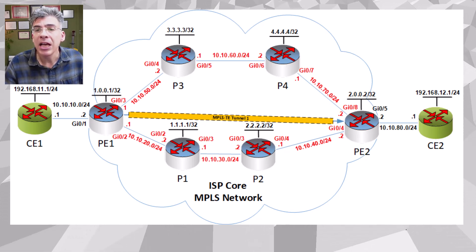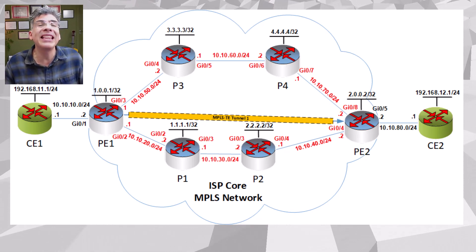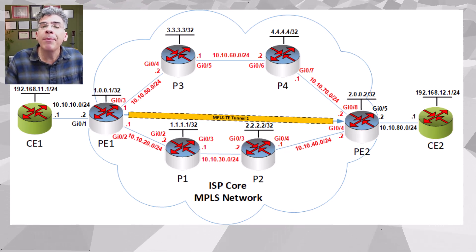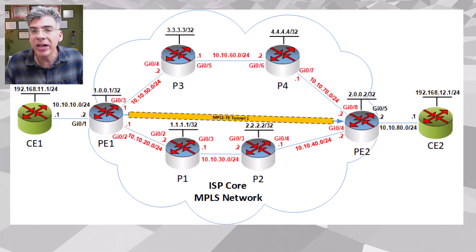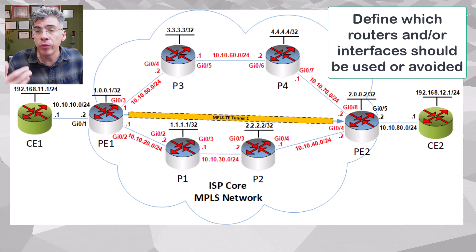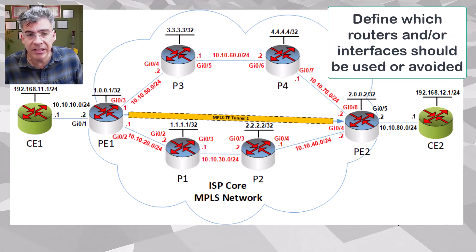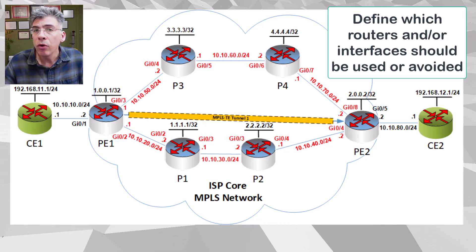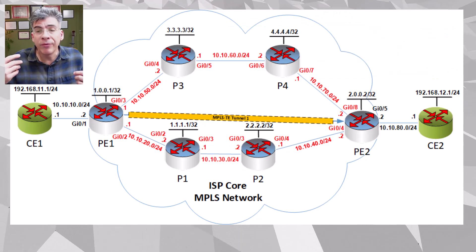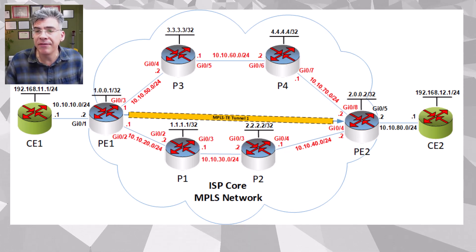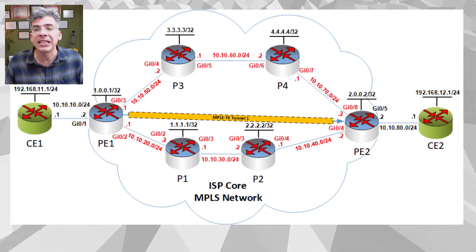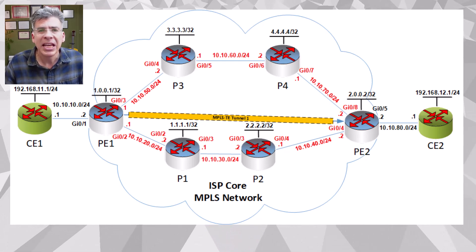Specifically, we'll see how to do this using the explicit path configuration. Now when we talk about explicit paths, what we are actually doing is defining which routers and or interfaces the tunnel should use or avoid. Now this is our topology. If you want to refresh your memory on what has been configured up to now, take a look at some of the previous videos in our MPLS playlist. Here's a quick review.